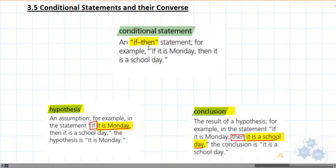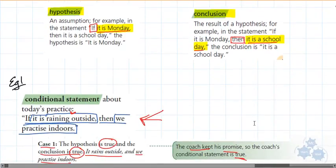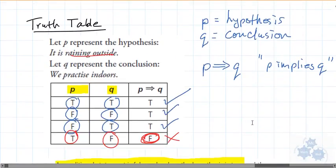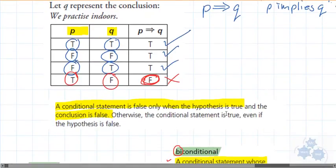So last lesson in 3.5, we learned a lot about some of these definitions: what a conditional statement was, the parts of a conditional statement. The conditional statement is if-then, and the hypothesis is right after the if, and the conclusion is right after the then. We talked about the truth of conditional statements and a truth table. Remember, we're going to use this today as well for this lesson, that if the hypothesis is true and the conclusion is false, that's when the whole statement is false. Any other combination, the statement still is a true statement.